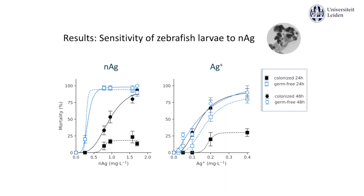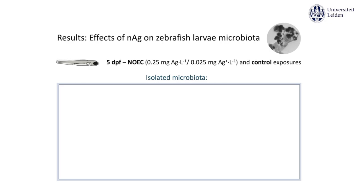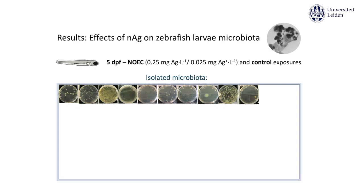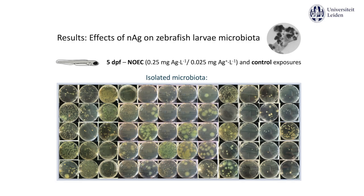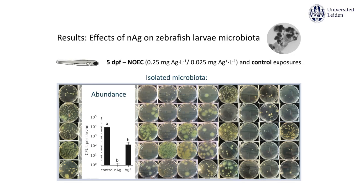At the end of exposure we also checked how the particles affected the microbiota. We did so by isolating microbes from larvae exposed to the lowest sublethal concentrations of particles and ions. This way we found that at these concentrations both ions and particles exert strong antimicrobial effects. This activity is well known, and for this reason silver has already been used for a long time as an antimicrobial agent.